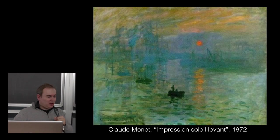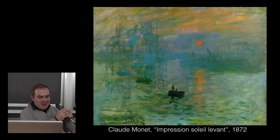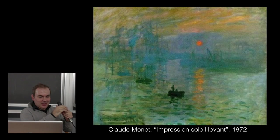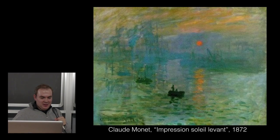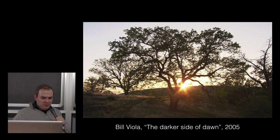Going back to Monet: one important painting is Impression Soleil Levant, the starting point of Impressionism — it's a sunrise. While looking at things, I collected some other sunrises. I have my own sunrise, but there is also Monet's of course, and we also have one by Bill Viola, who recorded a sunrise. I also have two photos I took with my phone at Villa Panza during the installation.